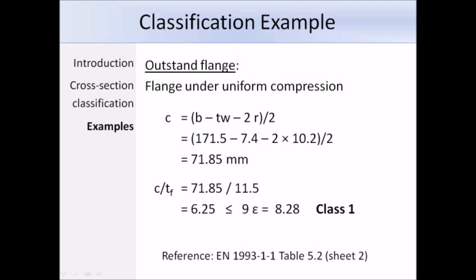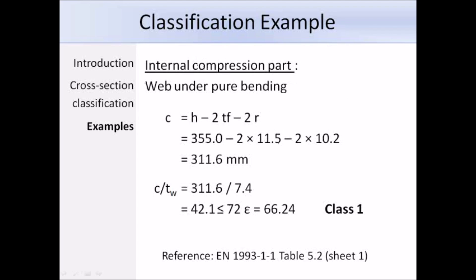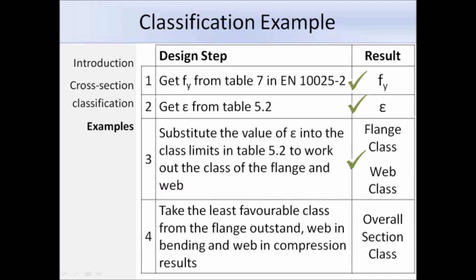For the web (internal compression part): c = H − 2T_f − 2R = 311.6 mm; dividing by the web thickness T_w = 7.4 mm gives c/t = 42.1. The class 1 limit for internal compression parts is 72ε = 66.24. Since 42.1 < 66.24, the web is also class 1. Step 4 — overall section class is the highest class of flange or web; both are class 1, so the section is class 1. For class 1 sections, ultimate limit state verifications should be based on the plastic resistance.